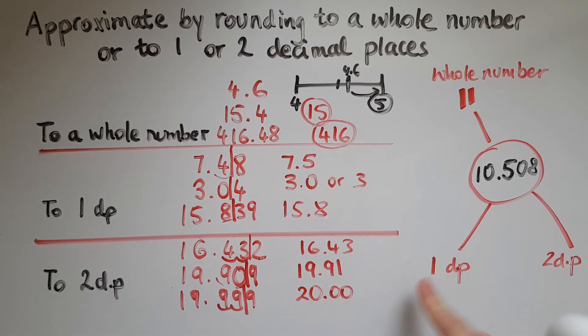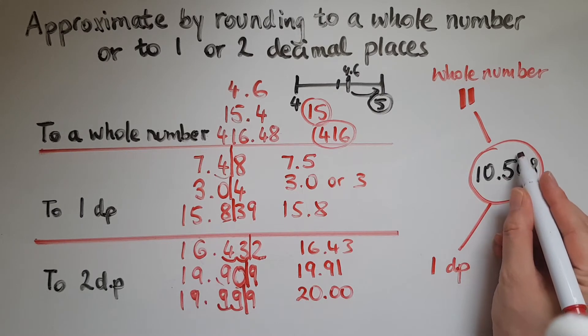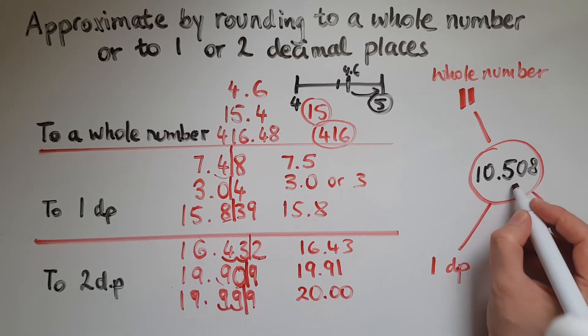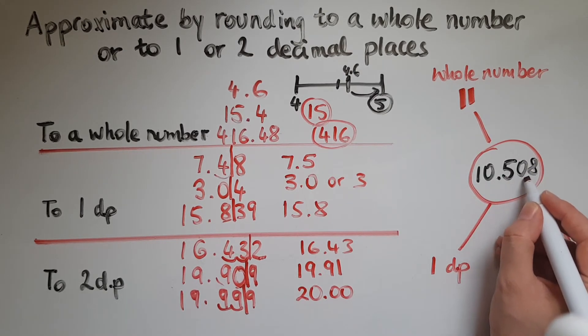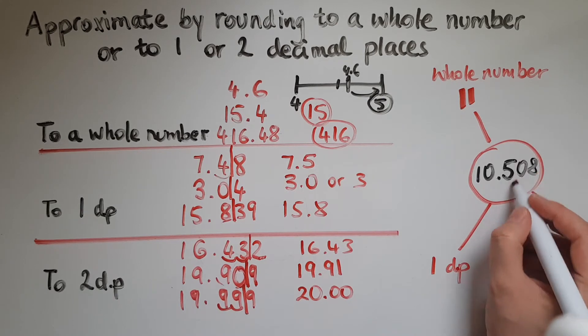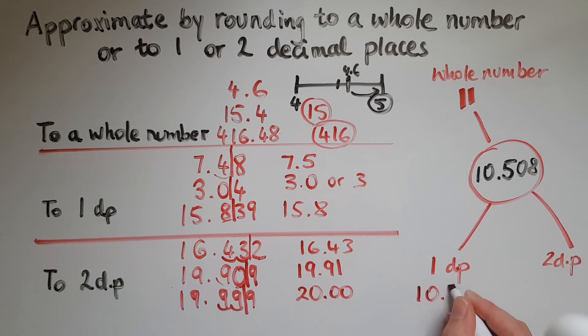To one decimal place, meaning I need to have just one digit here after the decimal point. So I'm going to either have 10.5 or 10.6. Looking at the digit next to the 5 where I need to cut it off, it's a 0, meaning that I need to round down. So this is going to stay as a 5. So I'll have 10.5.